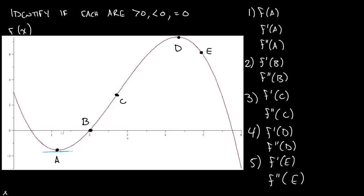So f of a — is this less than 0, greater than 0, or equal to 0? Well, f of a is below the x-axis, with a value of somewhere between negative 1 and negative 2, so this is negative. f prime of a — you can see the tangent line I already drew here. The slope of the tangent line at a is equal to 0. Remember that this is the graph of f of x, not f prime — that's important. And then f double prime: we're looking for the concavity at a, and this is definitely concave up.